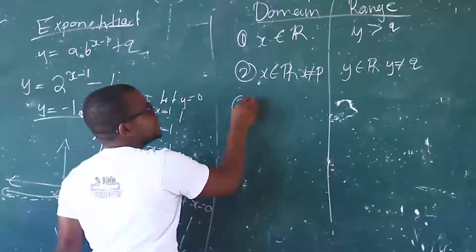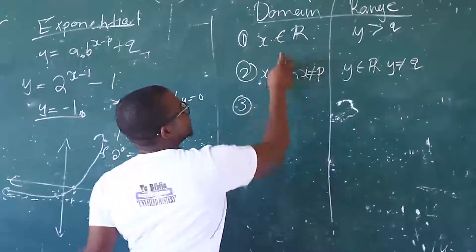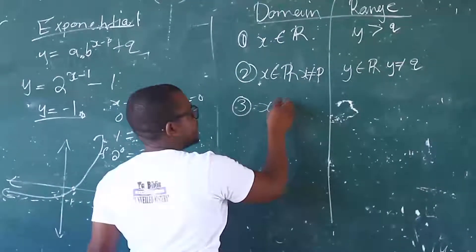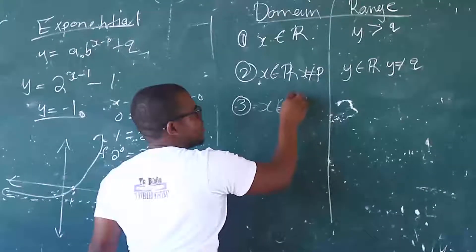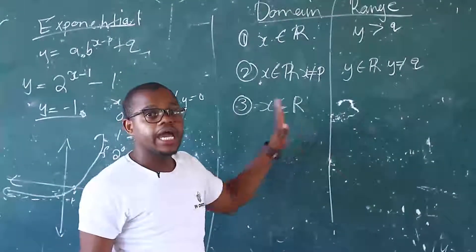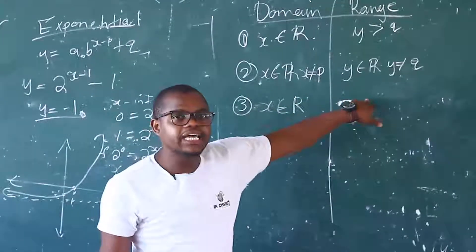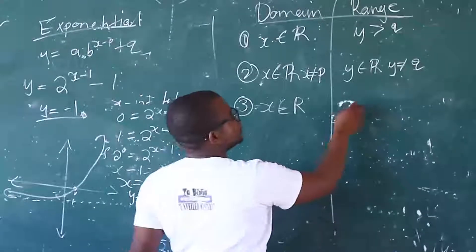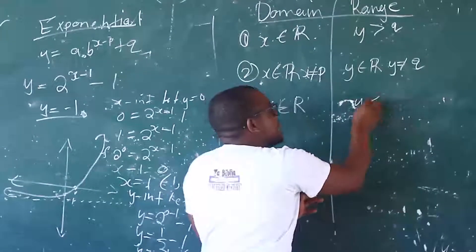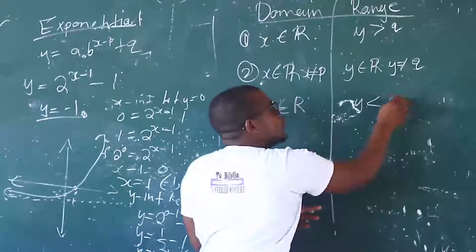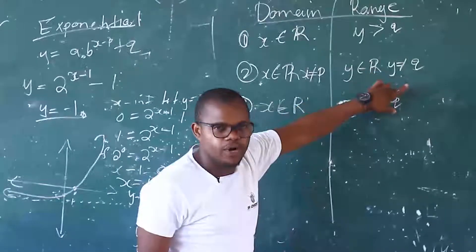So number three is the parabola. For the parabola, X is an element of real numbers. X is an element of real numbers. Okay? But the range, Y must be what? Y must always be less than Q. Q is the Y value of the turning point. Okay?